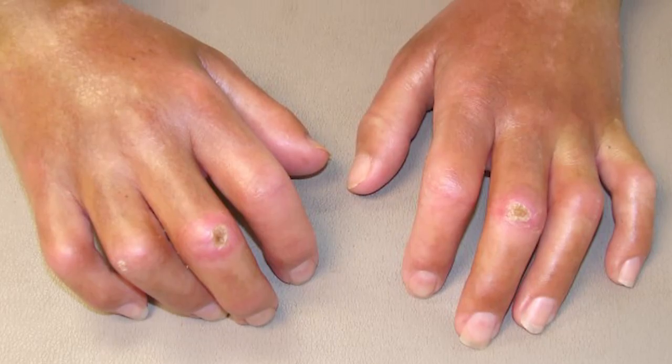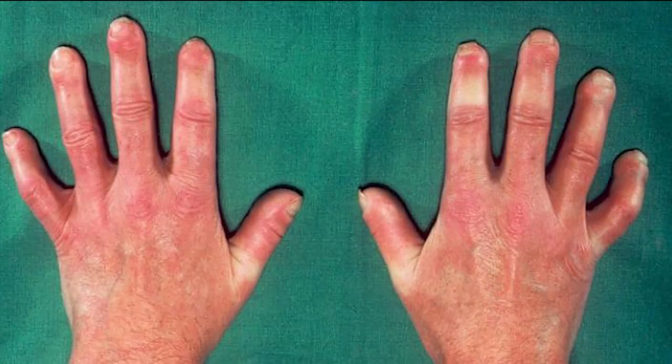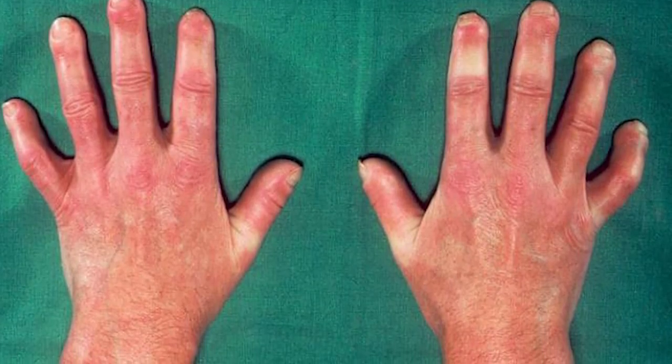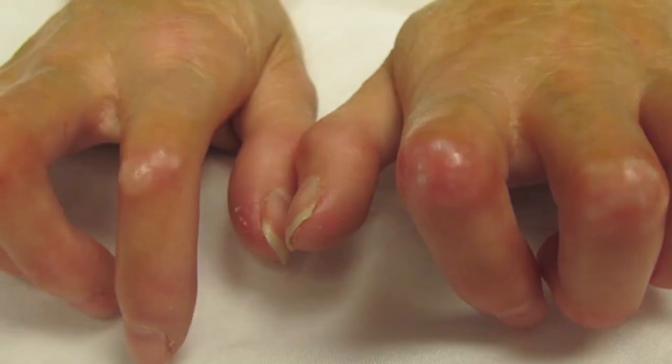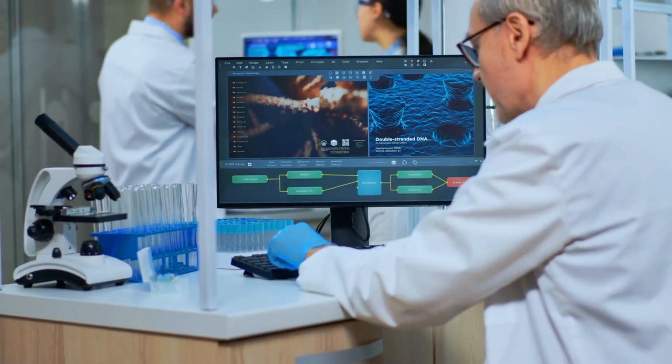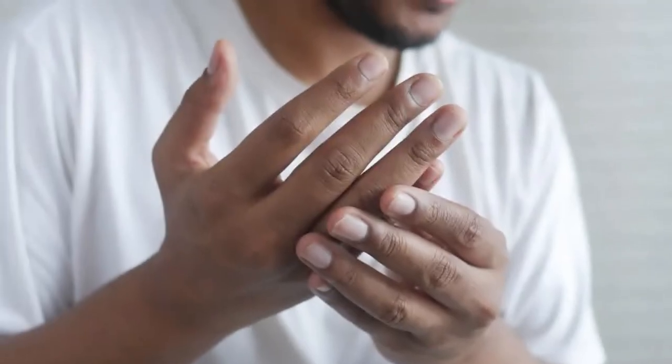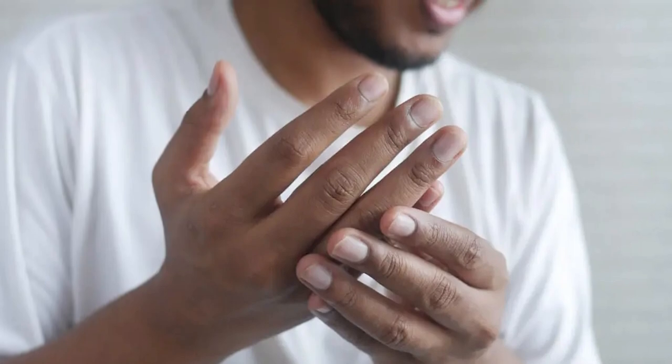And for our final act we have scleroderma. This condition involves collagen buildup which can also squeeze the median nerve and cause those familiar tingles and numbness. Alright, let's dive into the clinical side of things, shall we? It's all about what's happening in the wrist, hands, and fingers, so pay close attention.